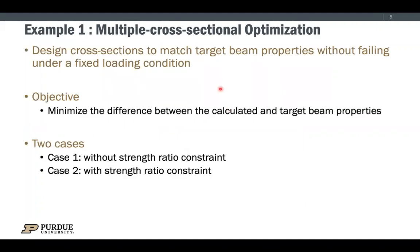To demonstrate the functionality of the framework, we selected two examples. The first example will conduct multiple cross-sectional optimization analysis based on a UH-60 model. This example is to design the cross-sections to match the beam properties without failing under fixed loading conditions. Since the load is fixed, we do not need to carry out the comprehensive analysis for this example. The objective is to minimize the difference between calculated and target beam properties. The target beam properties are extracted from the Dymore UH-60 validation example.